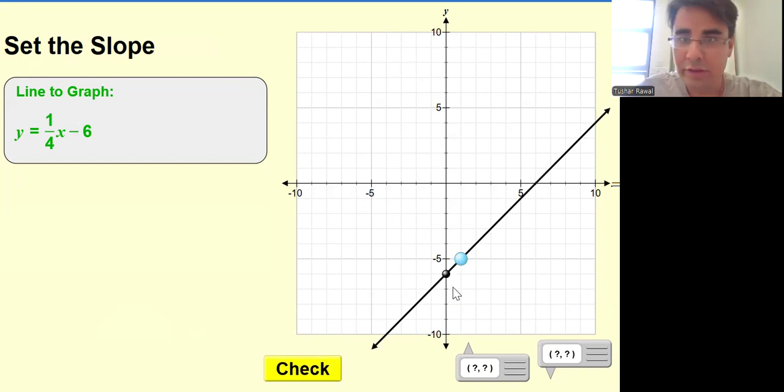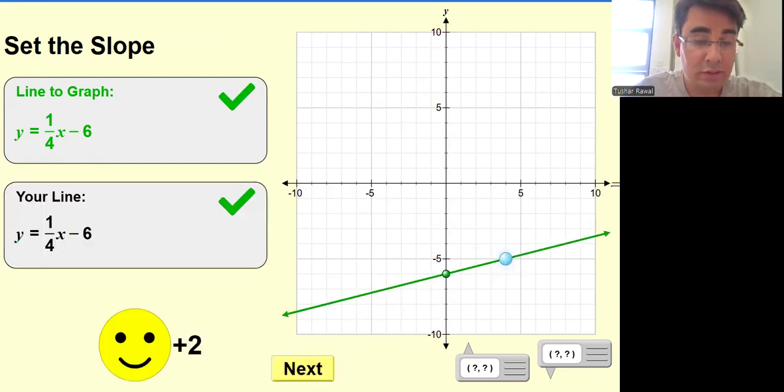Set the slope. So they have already fixed the point minus six. One over four. That means one up and four to the right. So that's the correct answer.